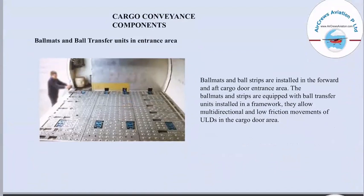The next device is cargo conveyance components. Conveyance belts are needed to transfer loads into an aircraft. There are various basic small conveyance components used on the flooring of the aircraft. The first is ball mats and ball transfer units in the entrance area. Ball mats and ball strips are installed in the forward and after cargo door entrance area. They are equipped with ball transfer units installed in the framework, allowing multi-directional and low-frictional movement of ULDs in the cargo door area.